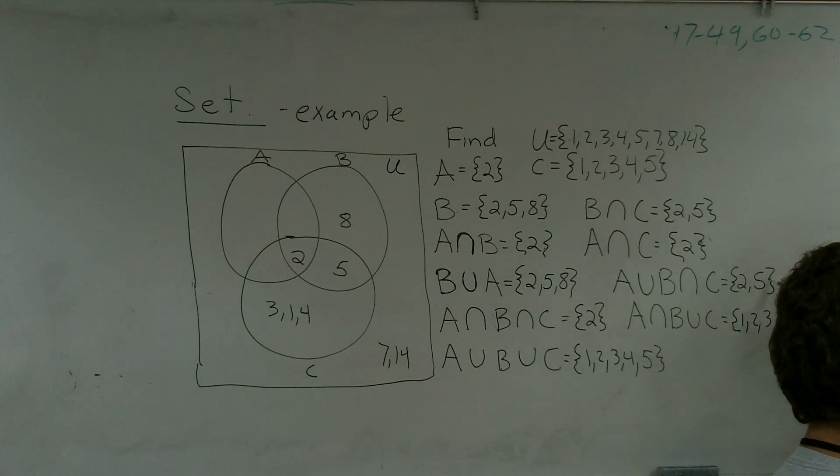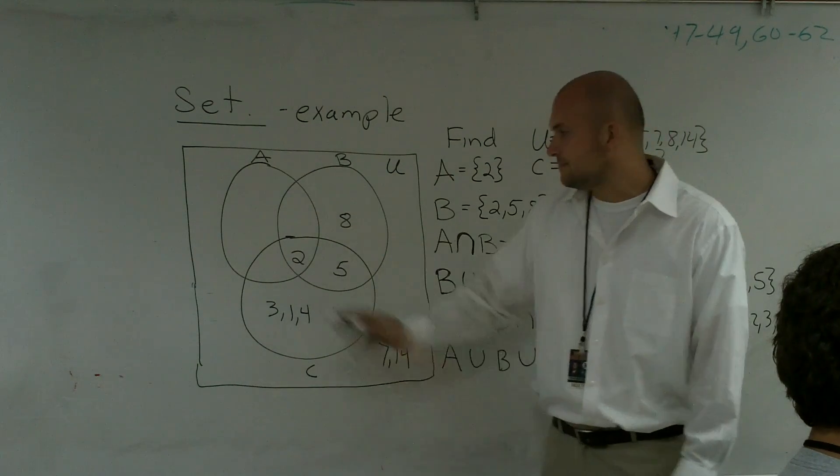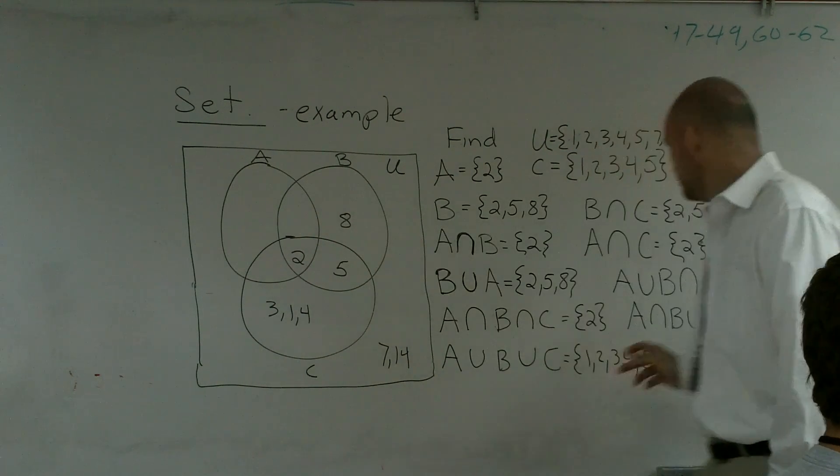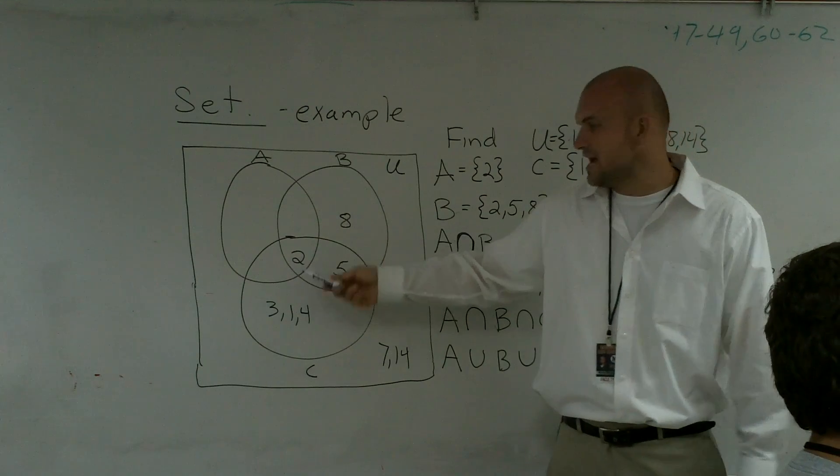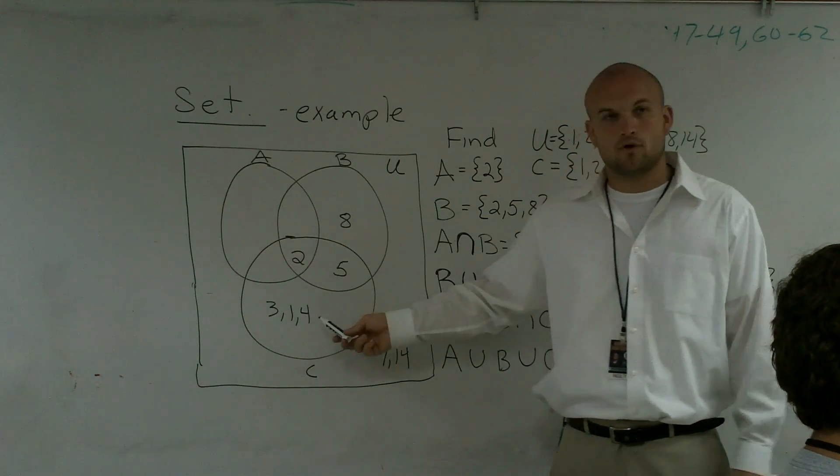So my answer is 2 and 5. Then the last one is A intersect B union C. So A and B, what do those two have in common? 2, union C. So that means everything that these two have in common plus everything that's in C, which is 3, 1, and 4.